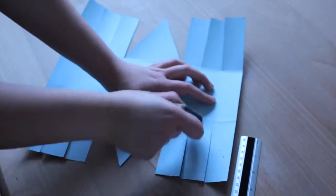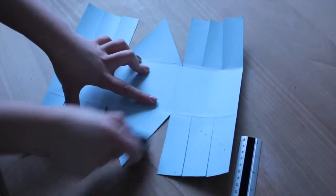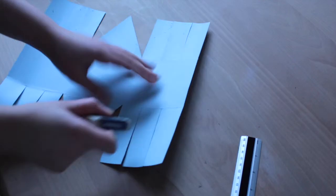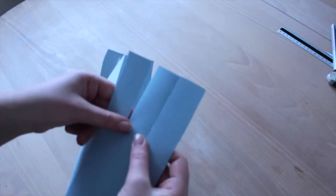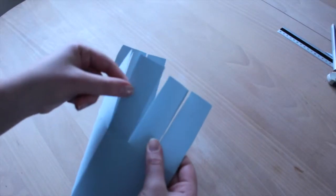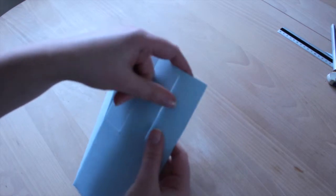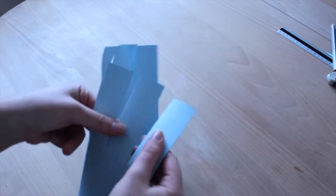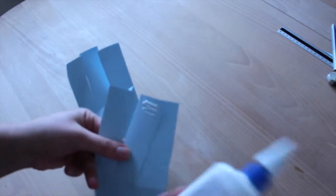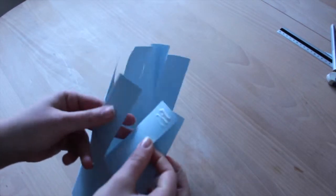You can take your eraser and gently erase all the lines you have made previously. Now I need to connect it all together, so you have strip number one, number two, and number three. Put some glue on strip number two and glue it behind number one.